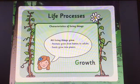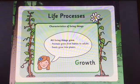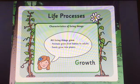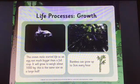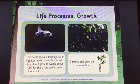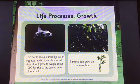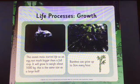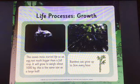The next one is growth. All living things grow. Animals grow from babies to adults. Seeds grow into plants. This ocean molar started life as an egg, not much bigger than a full stop, and it will grow to weigh about a thousand kilograms — the same size as a large bull. Bamboo can grow up to three centimetres every hour.